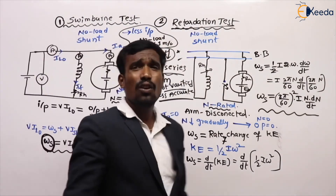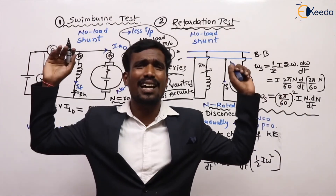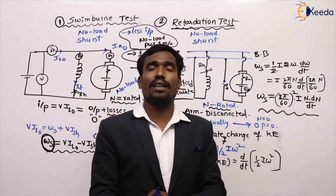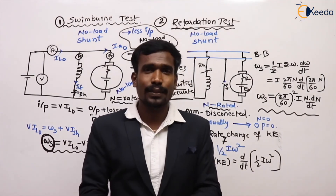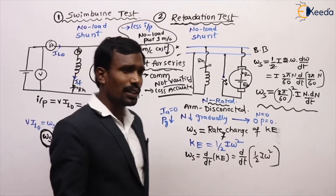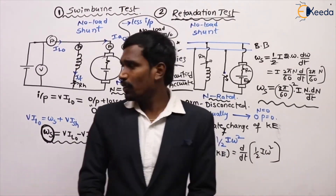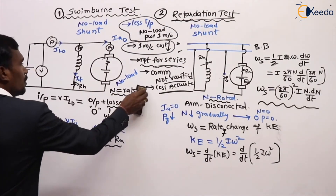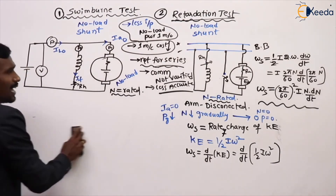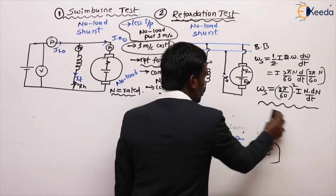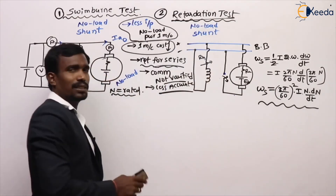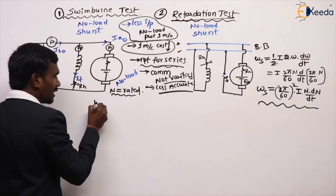These advantages and disadvantages apply to both Swinburne's test and retardation test — both are no-load tests and everything is the same. But the calculation of stray losses is different. We have calculated stray losses for both tests: in Swinburne's test based on electrical power, and in the retardation test based on kinetic energy.